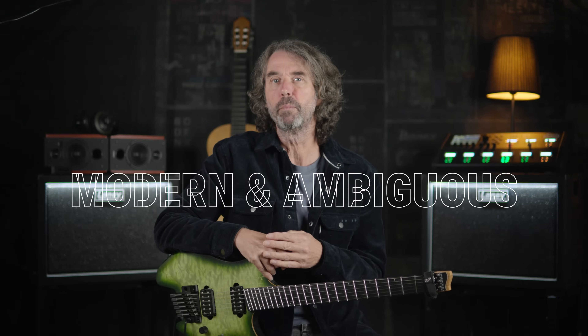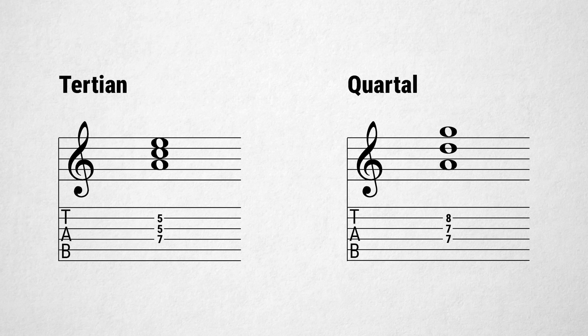Quartal harmony sounds modern and ambiguous. It was developed in the 20th century to move away from functional harmony by stacking fourth intervals instead of third intervals. Chords made in this way sounded very different and ambiguous and didn't need to resolve, like this.